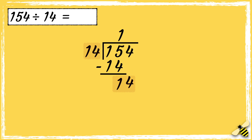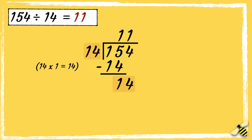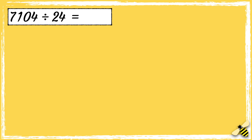We can now bring the next digit down. Now we need to see how many 14s go into 14. We know that 14 goes into 14 once, so the answer is 11. Let's have a look at another one: 7104 divided by 24.